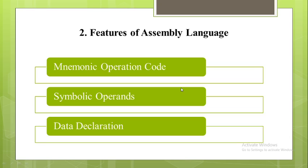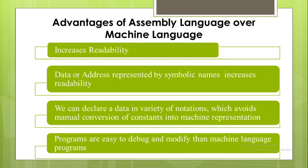The assembler does the conversion of constants into their machine representation. The constant data can be declared in decimal notation instead of machine representation. So these are the features of assembly language which make the job of programming very easy.